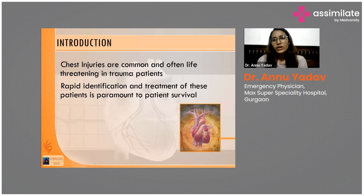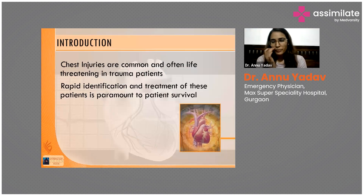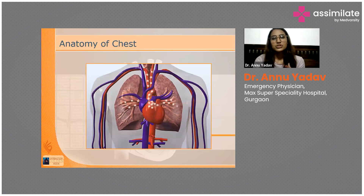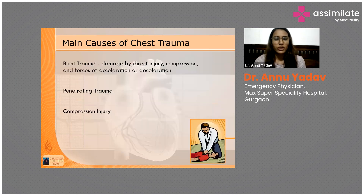Introduction to chest trauma: whenever there is a trauma impacting the chest, it is very common and mainly leads to life-threatening situations. The patient deteriorates very early, and identification is not very tough to do on an emergency basis. Treatment of these patients is very important. The major anatomy impacted includes the lungs, heart, and major vessels.